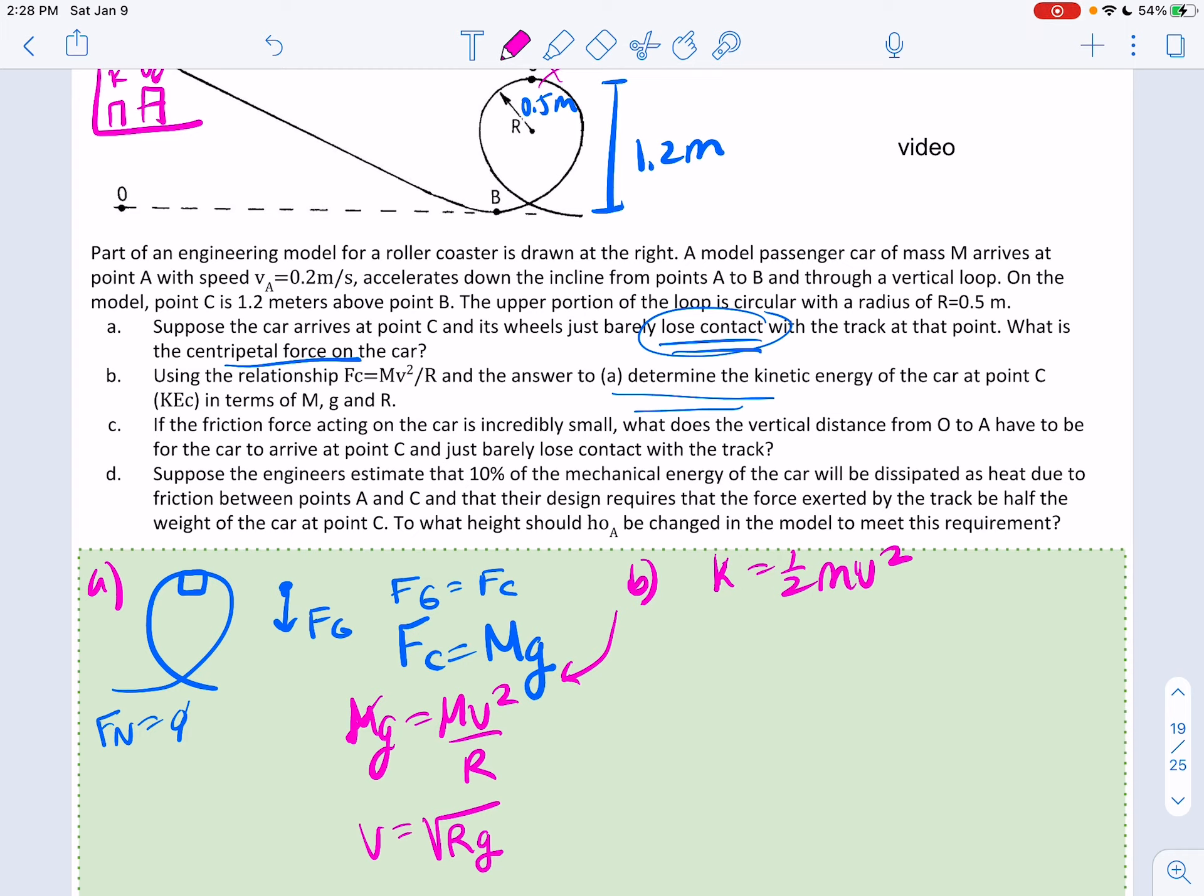At that top point. So if I go back over here, one-half M radical RG squared, I'm going to get one-half M RG will be my kinetic energy. And I'm in terms of the right thing, so that's good.